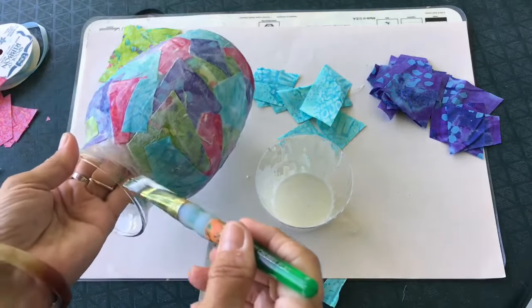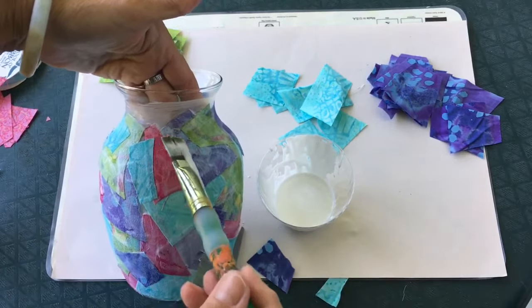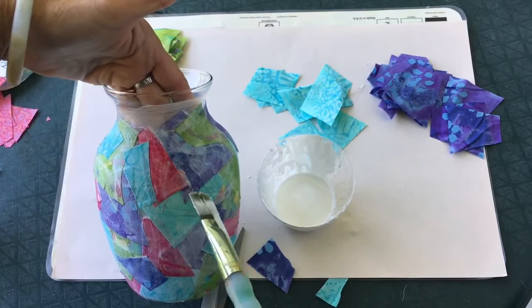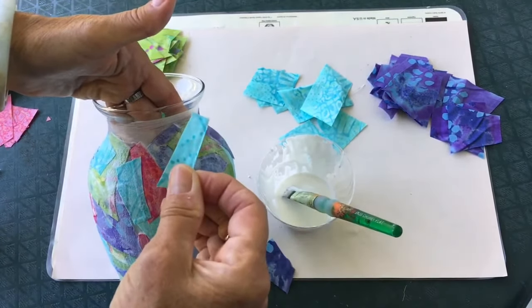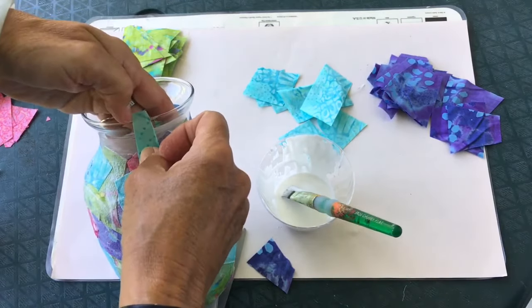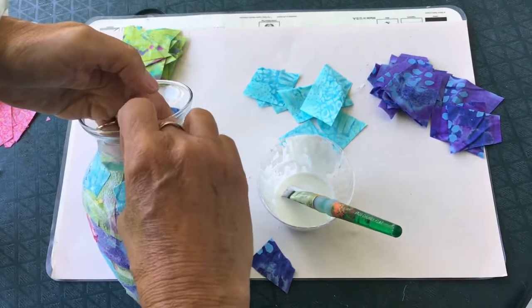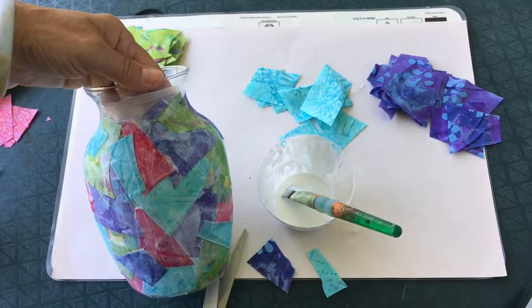But when I get into these smaller areas around the neck of my vase and the lip, I'll want to trim down my pieces a little bit smaller so that they don't wrinkle as I'm bending around corners. And it gives me a little bit more chance to have variety of colors throughout.